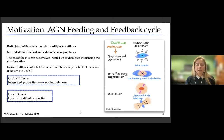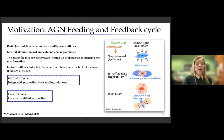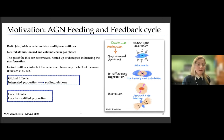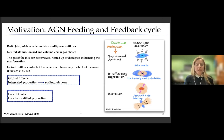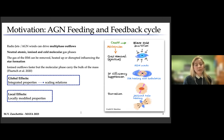In this context, radio jets and AGN-driven winds can drive multi-phase outflows — outflows in different gas phases from the neutral atomic to the ionized and cold molecular phases. The gas can be removed, heated up, or disrupted, therefore influencing the star formation process of the host galaxy.